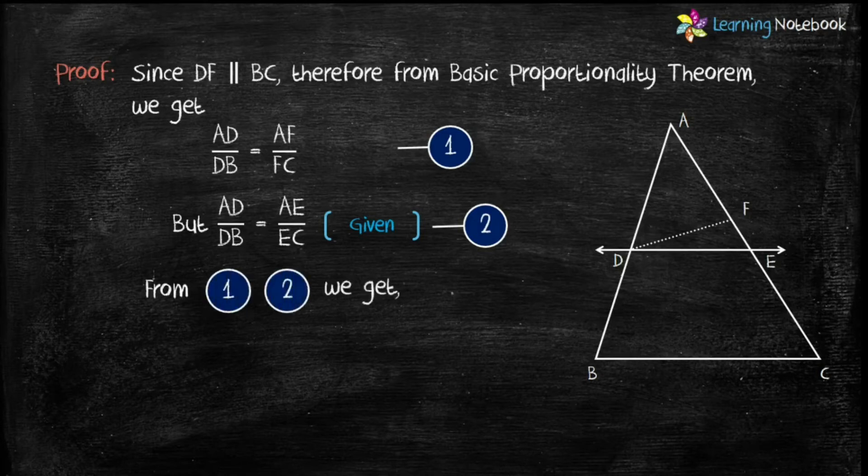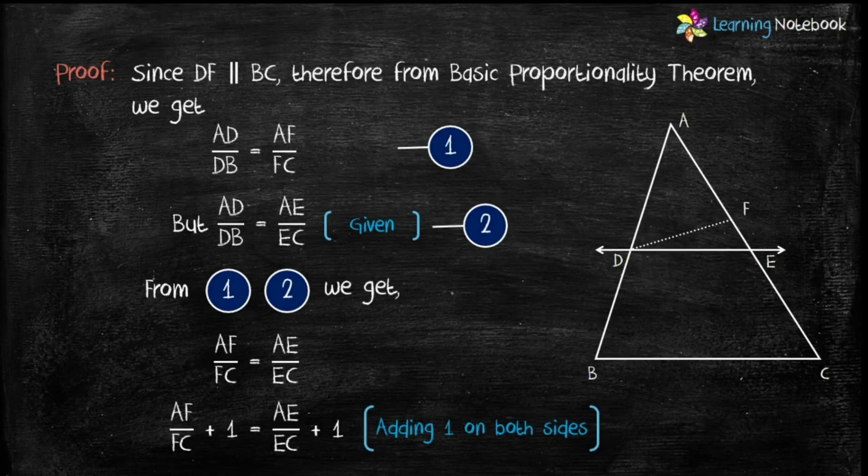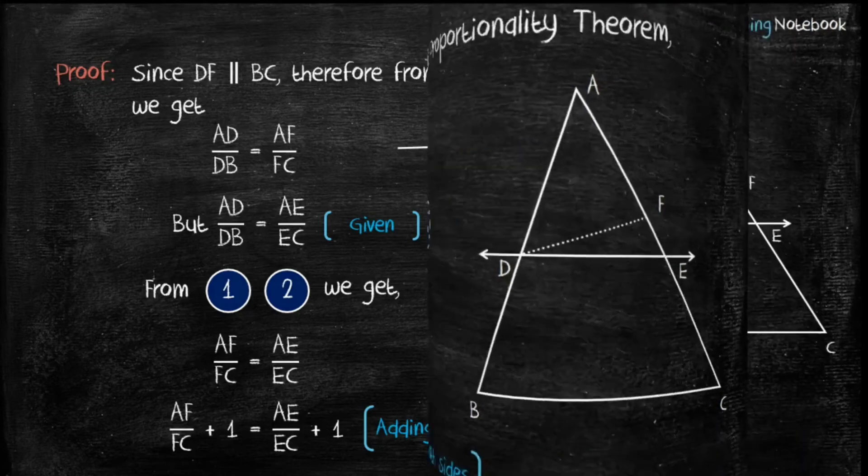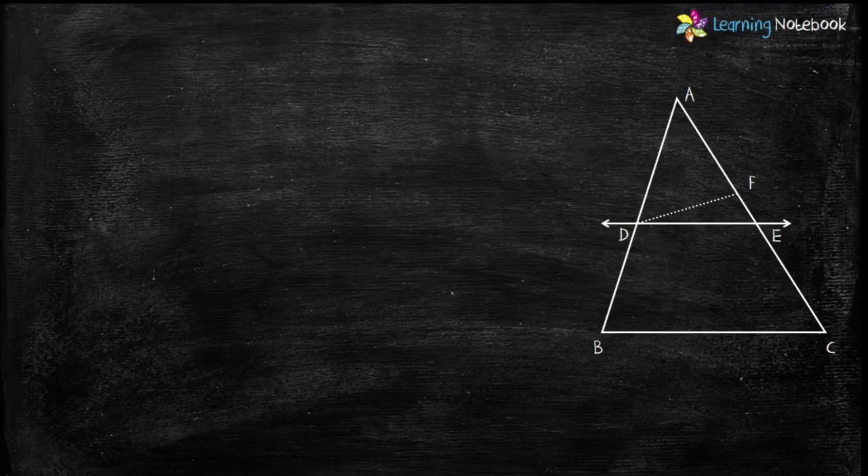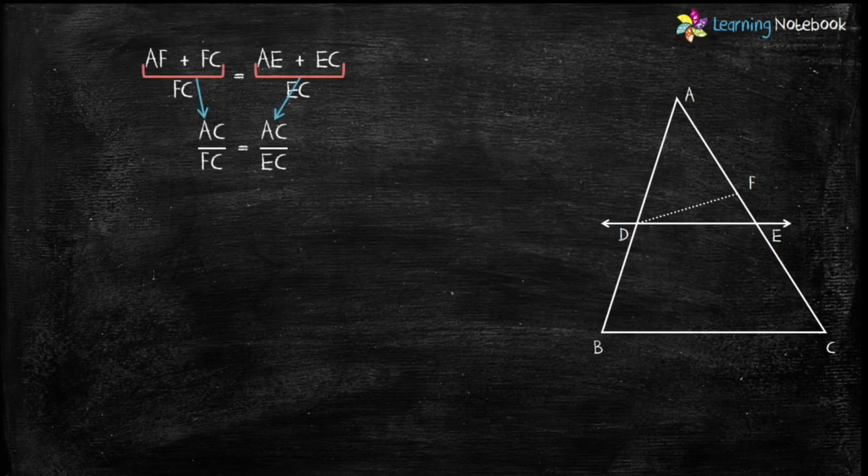So, from 1 and 2, we get AF by FC equals AE by EC. Add 1 to both sides. Take LCM and we get AF plus FC by FC equals AE plus EC by EC. AF plus FC is AC and AE plus EC also equals AC.